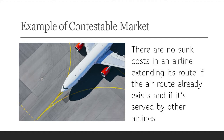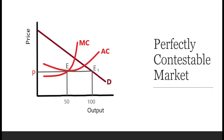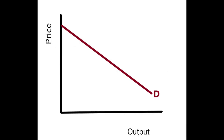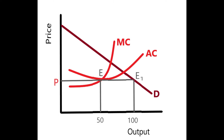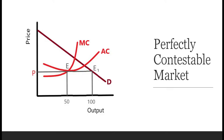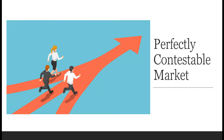A perfectly contestable market is where new firms can enter and exit with zero sunk costs. In this diagram, D is the market demand curve; AC and MC are the average and marginal cost curves of two identical firms in this market. These curves intersect at point E, where price OP is determined, at which each firm sells 50 units of output and operates in a perfectly competitive market, facing a horizontal industry demand curve PE–E1, where total demand is 100 units.